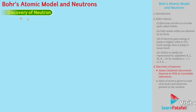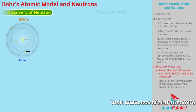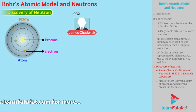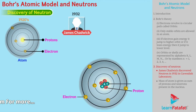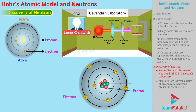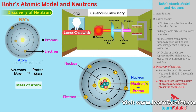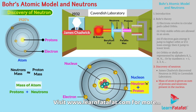Around the 1920s, it was believed that the atom is composed of protons and electrons. In 1932, James Chadwick discovered another subatomic particle while experimenting in the Cavendish laboratory. This particle was named neutron. Neutrons have mass similar to that of a proton. The nucleus of atoms contains neutrons along with protons — together these are called nucleons. Neutrons are represented by small n. The mass of an atom is given as the sum of protons and neutrons present in the nucleus.